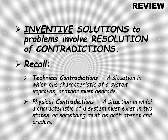As a reminder, we stated that inventive solutions to problems involve resolution of contradictions — we put it in all caps because it is such an important tenet of TRIZ. We didn't at the time tell you how to solve those contradictions; that's what today's lecture is about. Recall there are two types of contradictions: a technical contradiction is a situation in which one characteristic of a system improves while another must degrade. A physical contradiction is a situation in which a characteristic of a system must exist in two states, or something must be both absent and present.